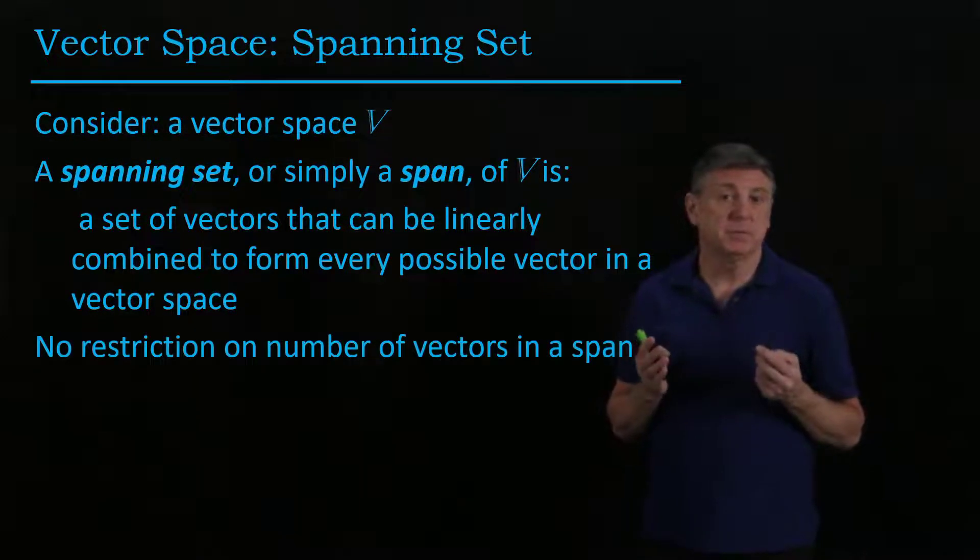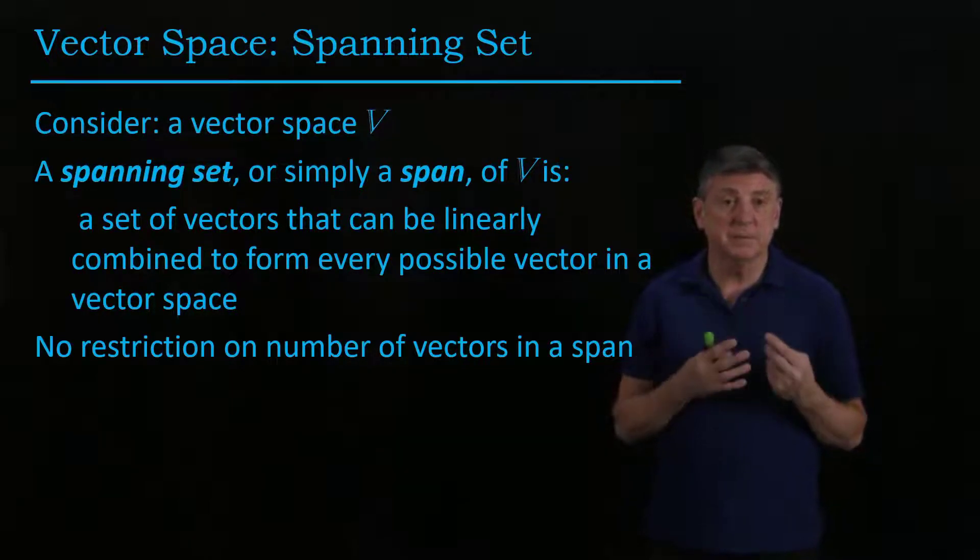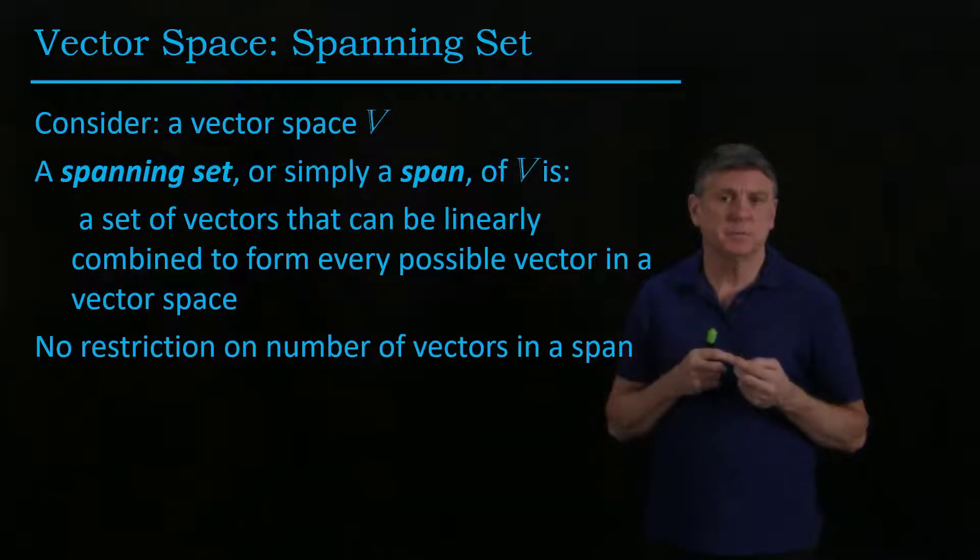There's no restriction on the number of vectors in a span. There's a certain minimum number, closely related to the dimension of the vector space, but no maximum.